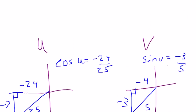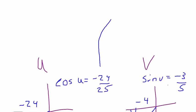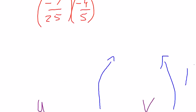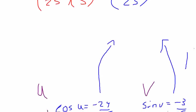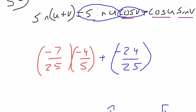Now we can substitute these values back in. Negative 24 25ths for cosine, we've got a plus sign here still, and for sine v is negative 3 5ths.